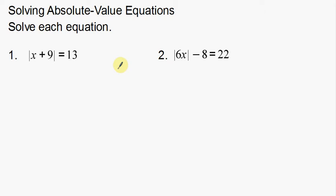If you have an absolute value that's just on a number, it's not really that big of a deal. It doesn't change very much. But if you have an absolute value on a variable, that actually changes a lot. With absolute values, we know that an absolute value is the distance from that number to zero on the number line.